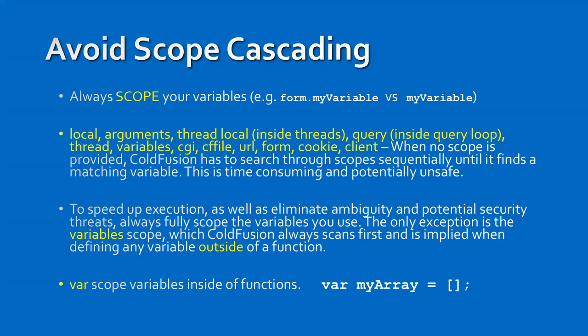Always scope your variables — it will make your applications a lot faster. Scope cascading is horribly slow. Inside your functions, var-scope your variables either with 'var' or by using local-dot notation. That's personal preference, but do it. There are a lot of reasons for that, including concurrency and race conditions.